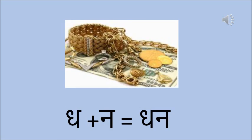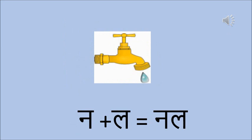Dhan — Dha and Na, yes, together they make Dhan. Dhan means bahot sara paisa, bahot sara zevarat — a lot of money and jewelry. The next one is Nal — Na and La together make Nal. Nal is a tap from which water drops. When we get water in our basin, it is called the Nal.